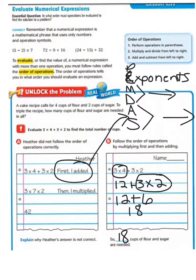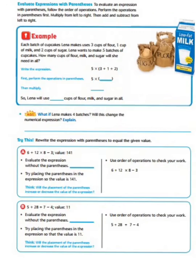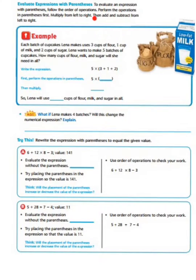Let's take a look at evaluating expressions with parentheses. To evaluate an expression with parentheses, follow the order of operations: perform the operations in parentheses first, then multiply from left to right, then add and subtract from left to right.